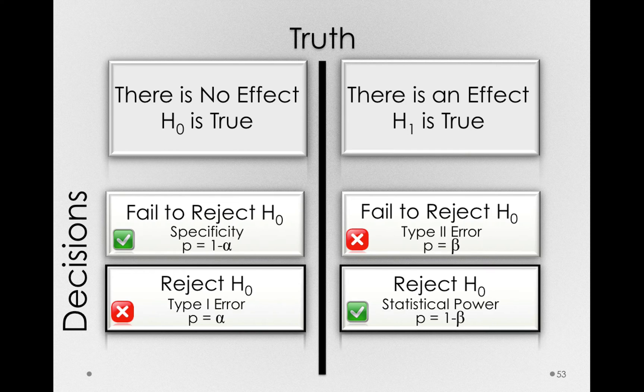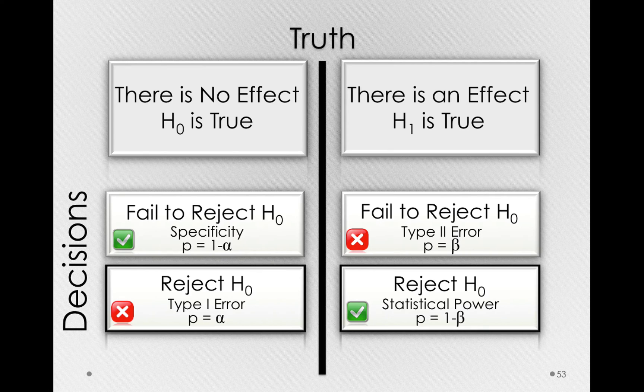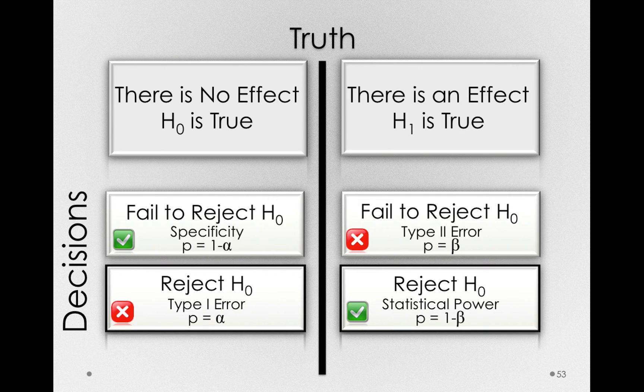So we have complete control over our type 1 error rate, which makes us comfortable about our reject decisions, because we can say something specific about the probability, if there isn't an effect, that we would have come to that decision.